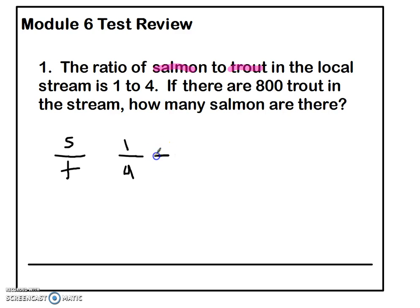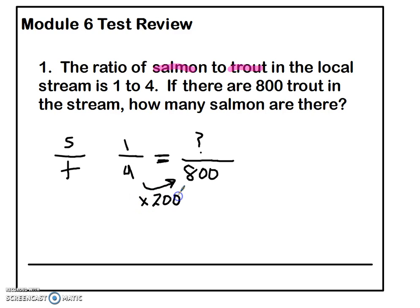We're going to find the equivalent ratio. The next sentence says there are 800 trout, and the last question is how many salmon — so it's a question mark. There are various ways to solve this. What I would notice is that to get from four to 800, I would multiply by 200. And if you multiply one term in a rate by 200, you have to multiply the other term by 200. One times 200 is 200, so there would be 200 salmon.